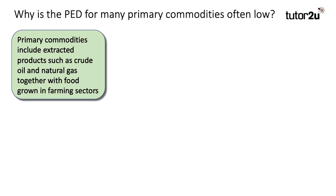We'll start with a definition. Primary commodities are those things that we extract from underneath the Earth's surface or we grow on the surface — so crude oil, natural gas, together with food grown in the farming industry.